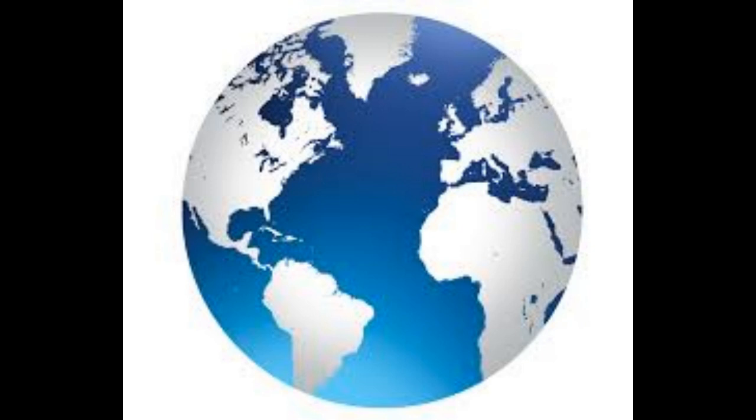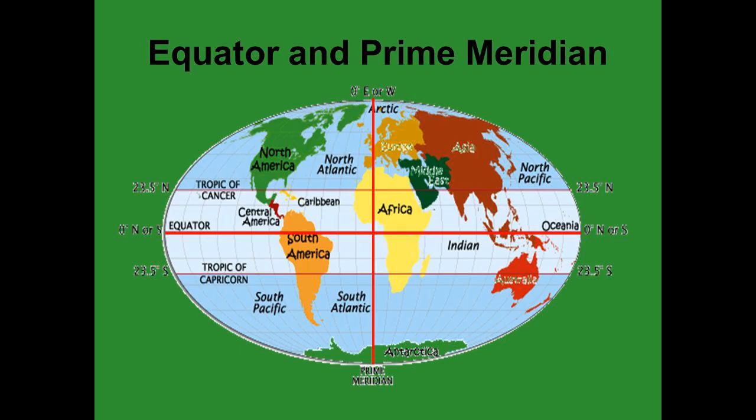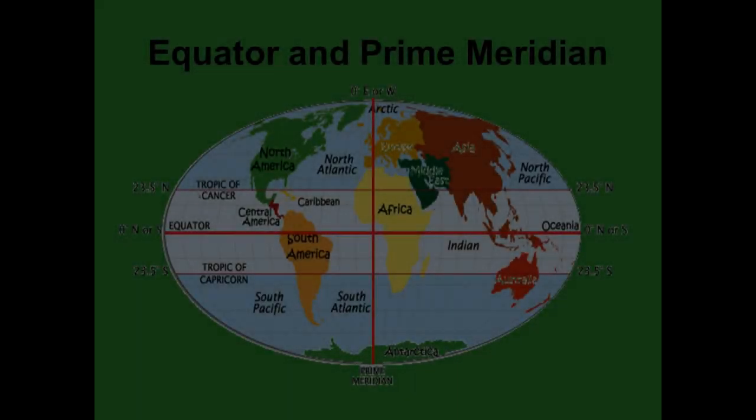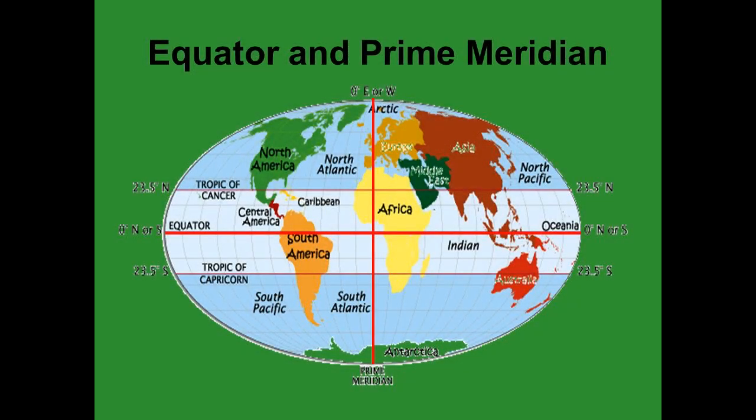Now, coming back to the specific coordinates: latitudinally, India is located between 8 degrees 4 minutes N to 37 degrees 6 minutes N. Longitudinally, India is located between 68 degrees 7 minutes E to 97 degrees 25 minutes E.